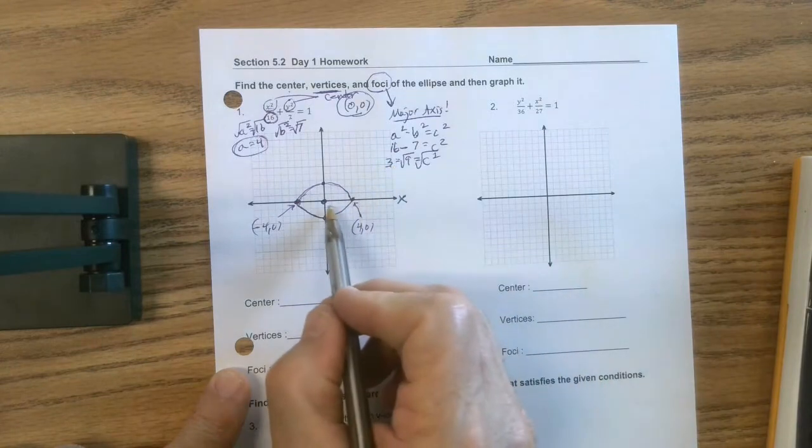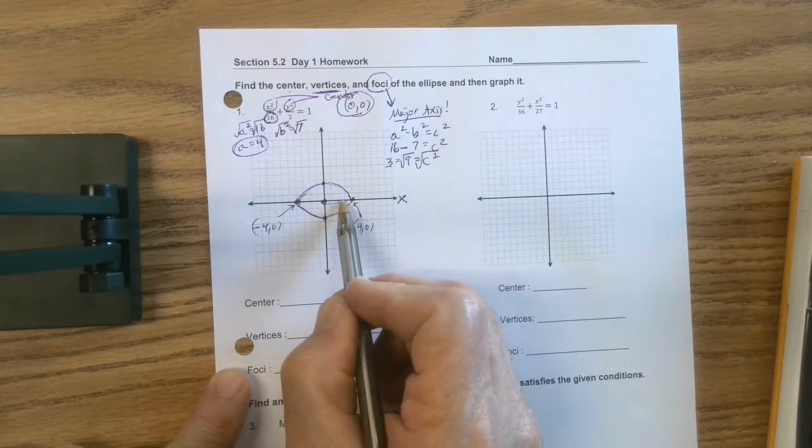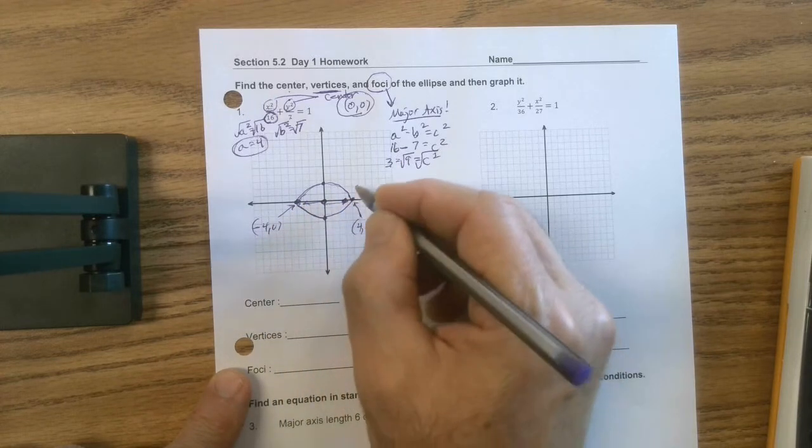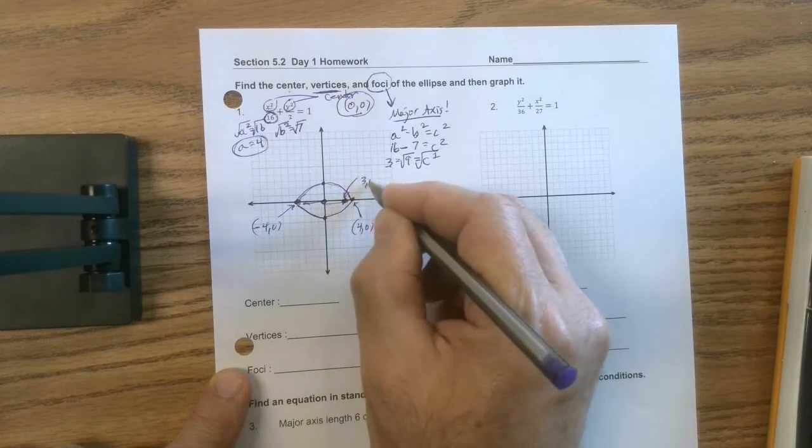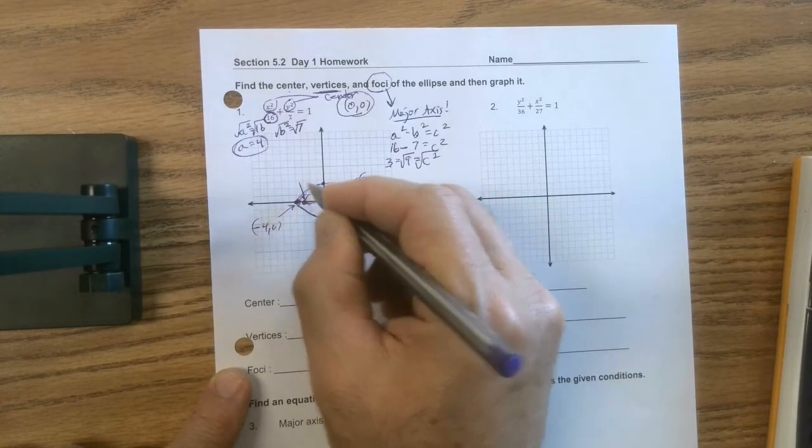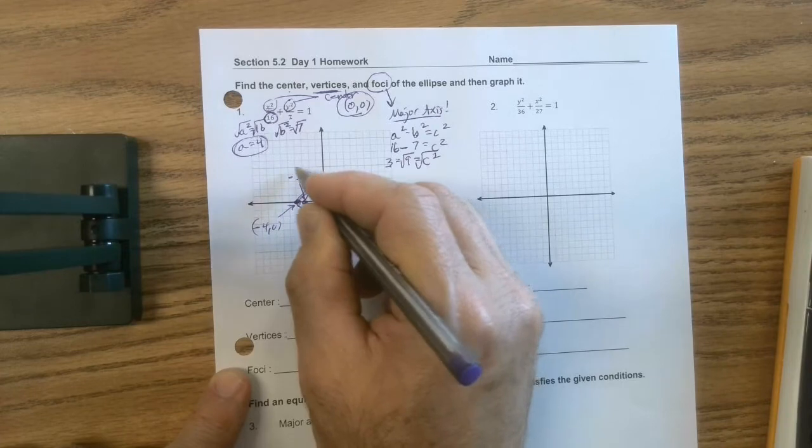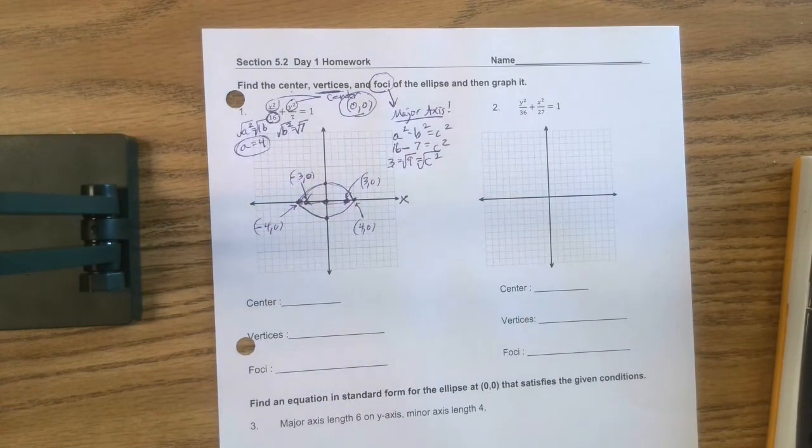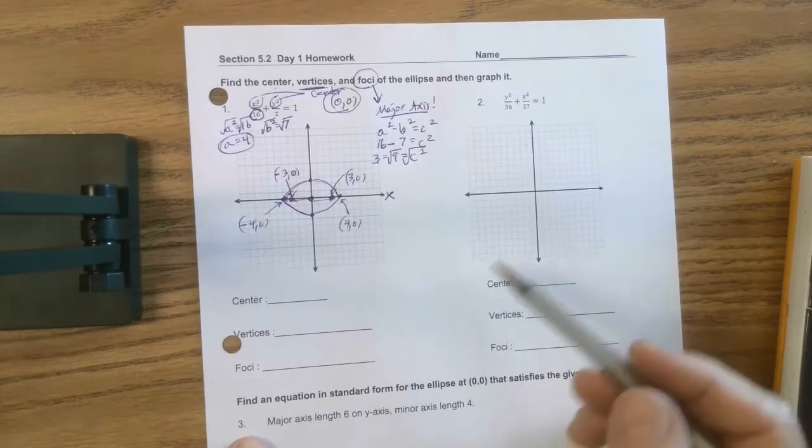So we take the square root and we get 3. But wait, that means I've got to go this way 3, and I've got to go that way 3. So that means this right here is 3, 0. And this one right here is negative 3, 0. So that one worked out pretty good for the foci.